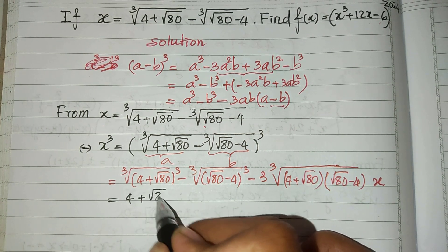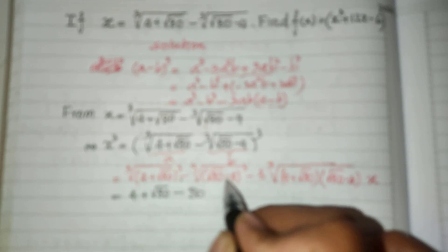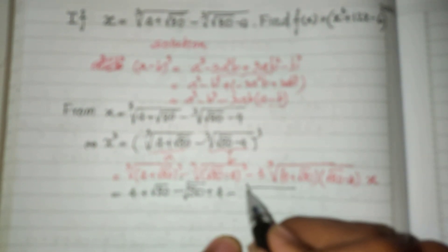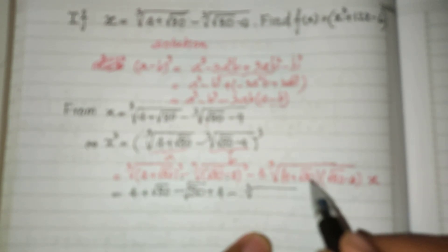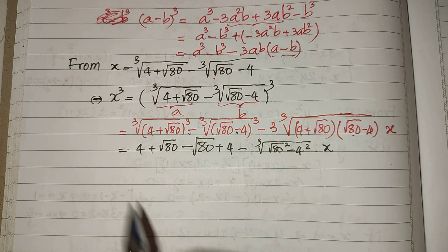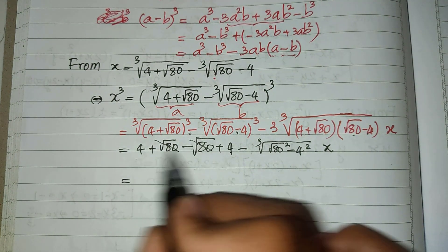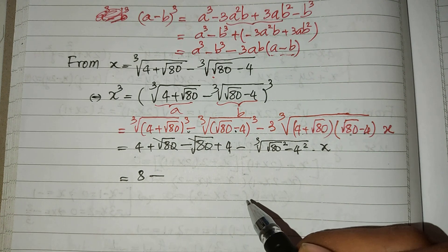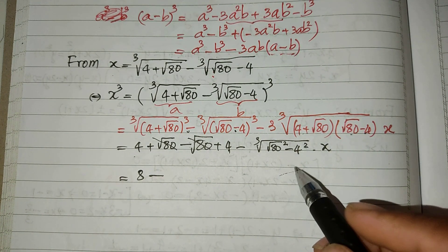We can cancel the square root scope, so we get 4 plus square root of 80, and minus — simplifying — we get square root of 80, and then minus times minus gives us plus 4. Now this equals minus the cube root of, using the formula (A plus B)(A minus B), which gives square root of 80 squared minus 4 squared, multiplied by A. Simplifying, this is equal to 8, and we can cancel this term.